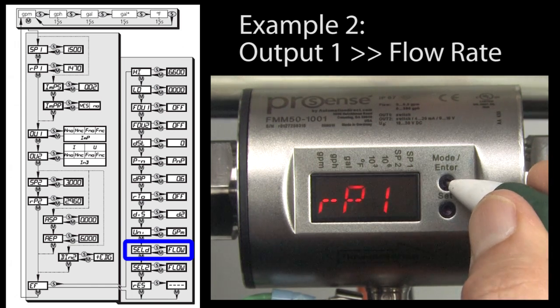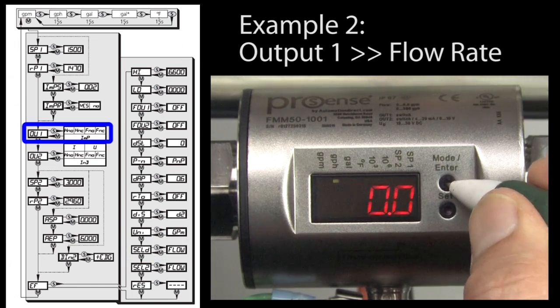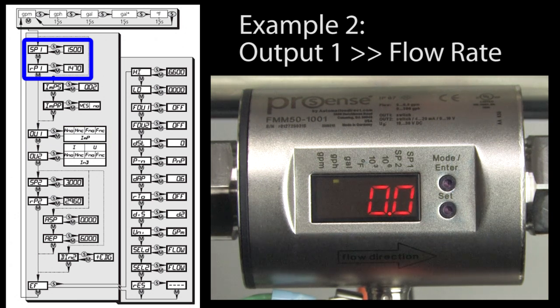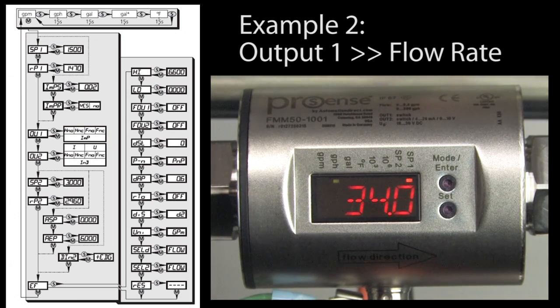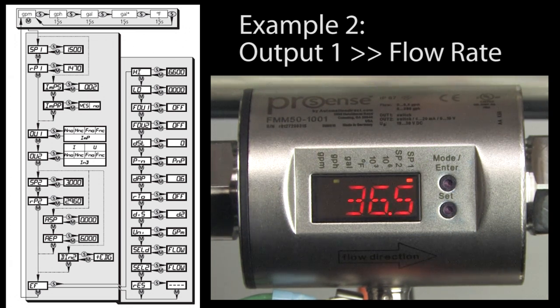That's it. Just select the output mode, how you want it to react and adjust the limits. If I turn the pump on, we see the flow rate is between 30 and 40 gallons per hour and output 1 is active. Perfect. If I modify the flow so it's outside my window, output 1 goes inactive. Exactly what we expect.